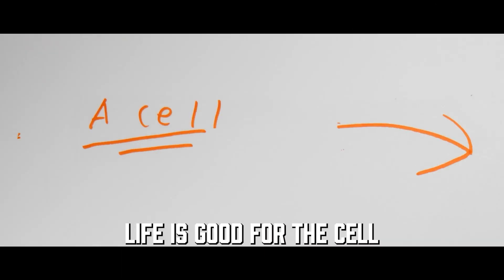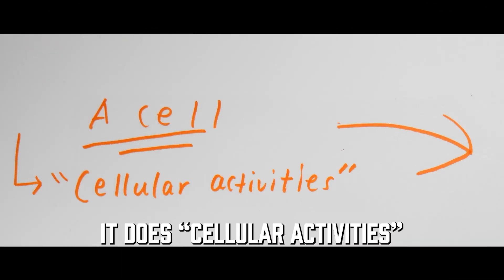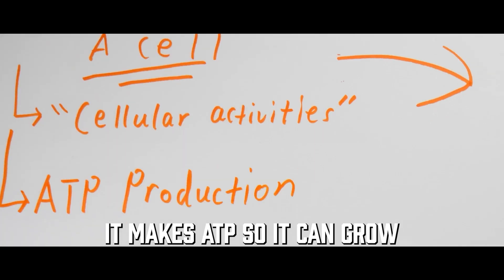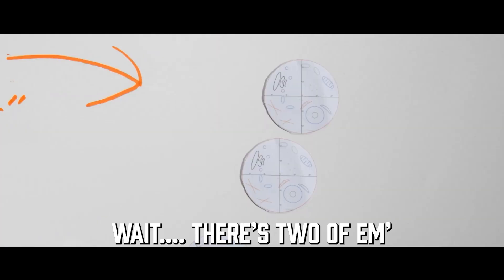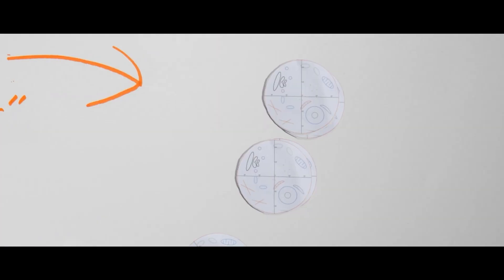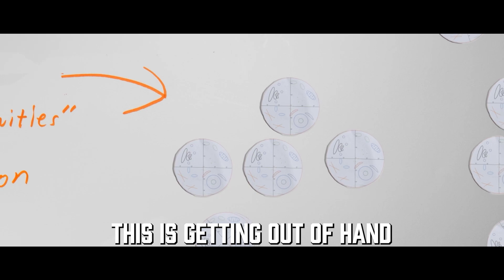This is a cell, made in Desmos. Life is good for the cell — it does cellular activities, it makes ATP so it can grow, and... wait, there's two of them! This is getting out of hand.